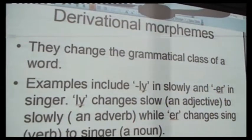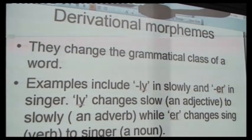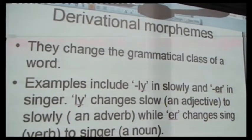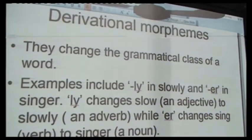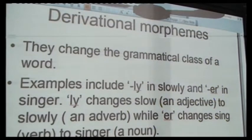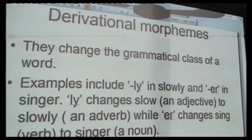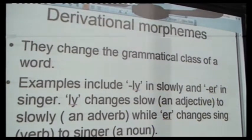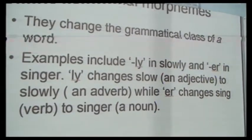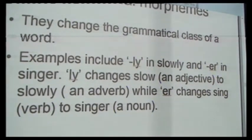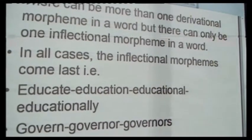We also have derivational morphemes. These are morphemes that have to be attached to free morphemes. They are different from inflectional morphemes because they change the grammatical class of the words they are added to. For example, '-ly' in 'slowly' and '-er' in 'singer.' When you add '-ly' to the adjective 'slow,' you change it to 'slowly,' which is an adverb. If you add '-er' to the verb 'sing,' that verb changes to a noun — 'singer.' So derivational morphemes change the grammatical class of the word they are added to.